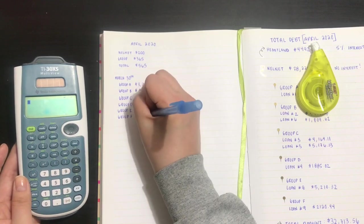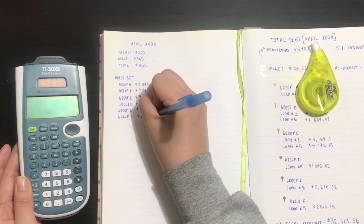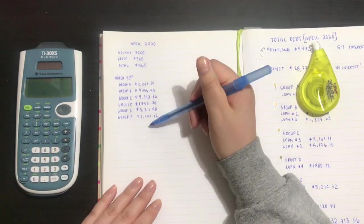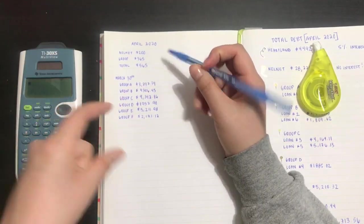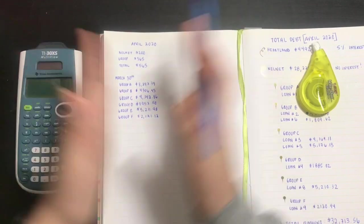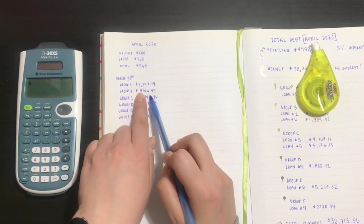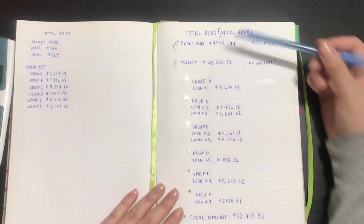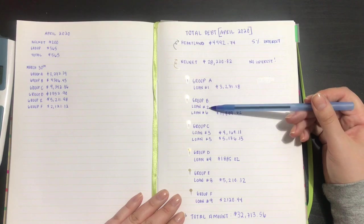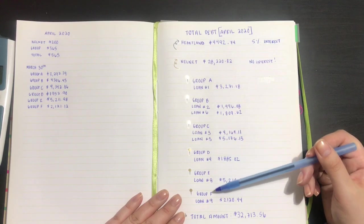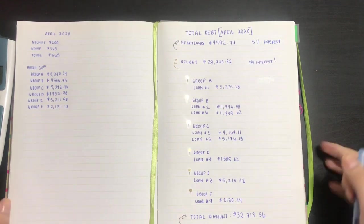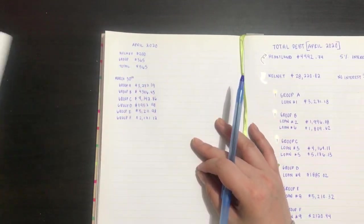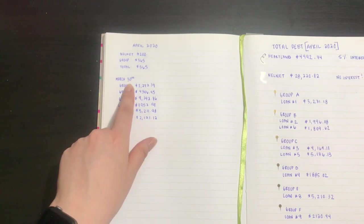So within these groups there's different loans. For example, loan B has two different loans, but I added them together and that gave me $4,306. Group C also has two loans, but for this purpose I'm just gonna do the groups total.